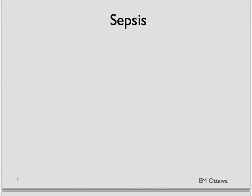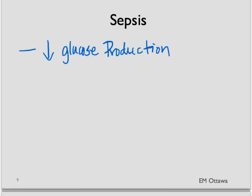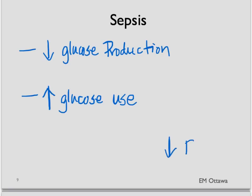First, sepsis. Sepsis causes hypoglycemia by two main mechanisms: it first inhibits gluconeogenesis, and it also increases utilization of glucose in the periphery. You don't make enough and you use up what's already made, and therefore, as a result, your blood sugar drops.